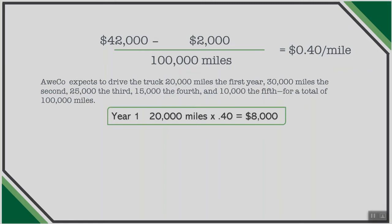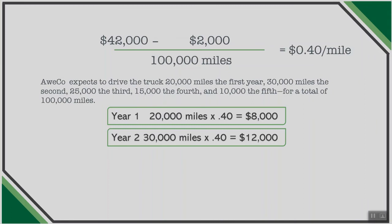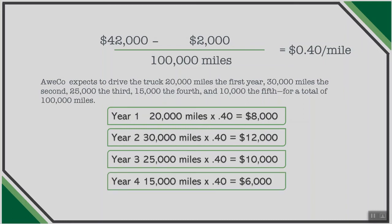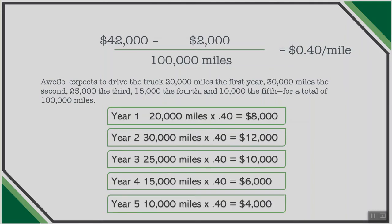In year one, 20,000 miles times 40 cents equals $8,000 of depreciation. Year two: 30,000 miles times 40 cents equals $12,000. Year three: 25,000 miles gives $10,000. Year four: 15,000 miles gives $6,000. Year five: 10,000 miles at 40 cents gives $4,000. If the truck is driven beyond 100,000 miles, the asset will still be used but there will be no additional depreciation expense since it's fully depreciated.